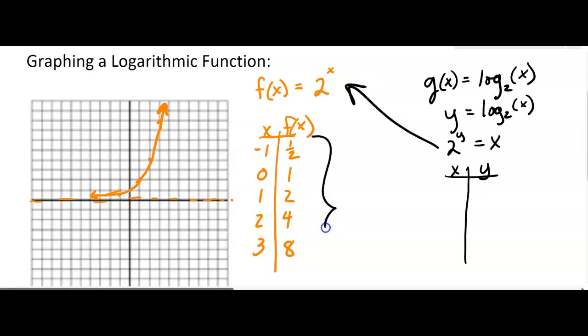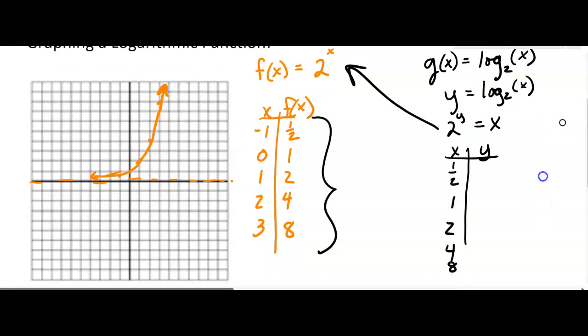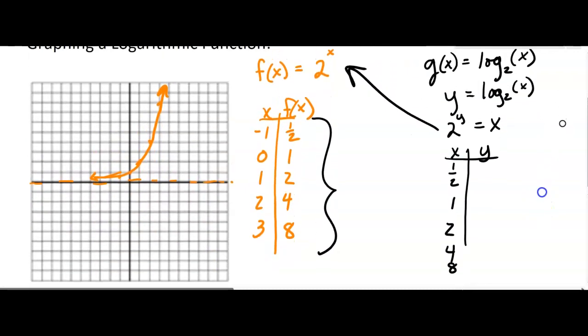I can take this table and switch the x and y values. So it's going to be 1/2, sorry not 0, 1, then 1, 2, 4, 8. I'll scroll up a little bit here. And then on the other side you have negative 1, 0, 1, 2, and 3.